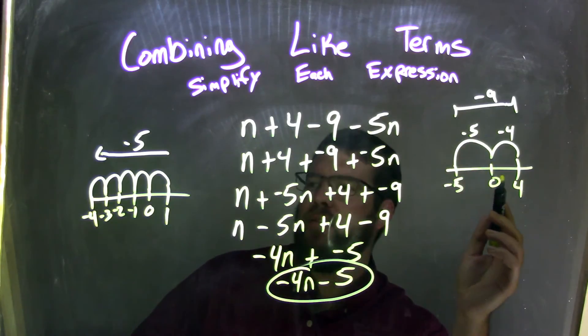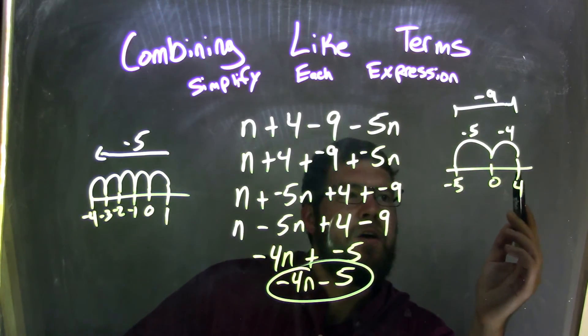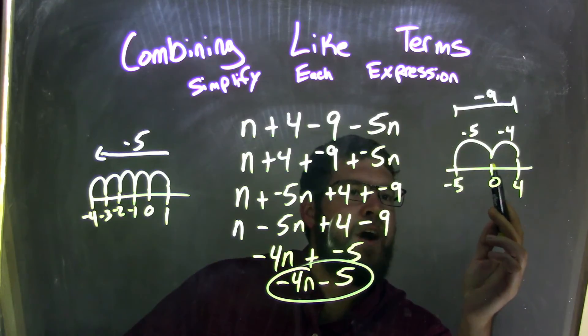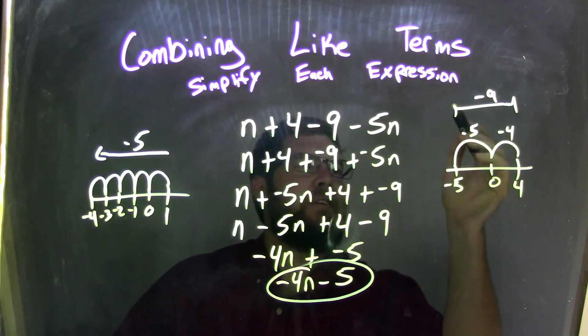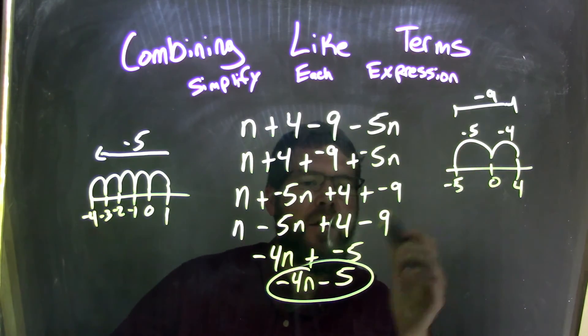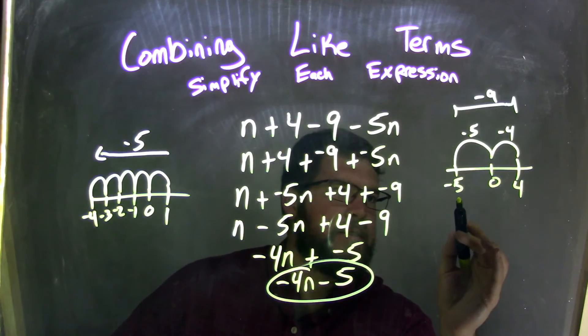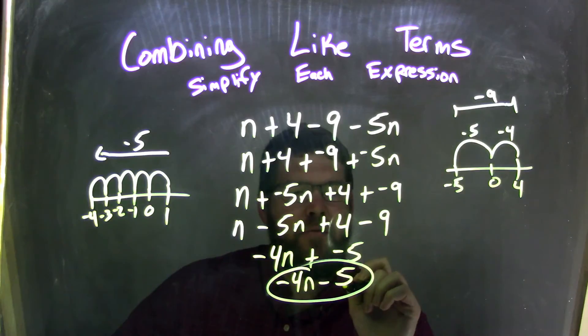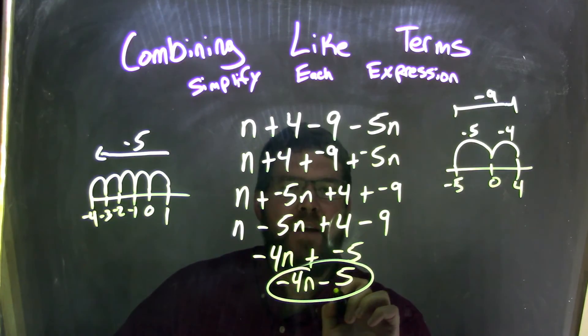Now we have 4 minus 9. Same process, but instead of doing every single tick mark, I kind of jumped. So minus 4 units got me to 0, and minus another 5 units got me to negative 5, which gave me a grand total of negative 9. So we have plus negative 5 now, which is our end point here. Well, adding a negative, same thing as subtraction, and that looks nicer. So our final answer here is negative 4n minus 5.